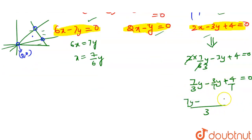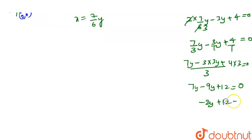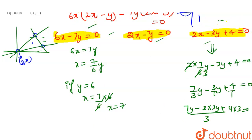Taking LCM of 3: (7y − 9y + 12)/3 = 0, so −2y + 12 = 0, giving y = 6. Then x = (7/6) × 6 = 7. The intersection point of the first pair line and the third line is (7, 6).